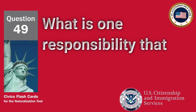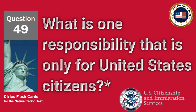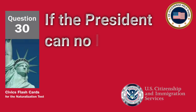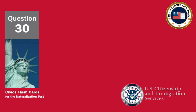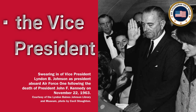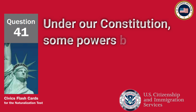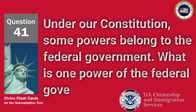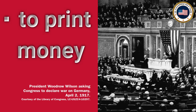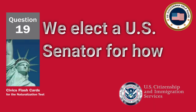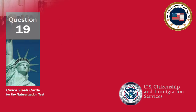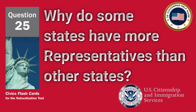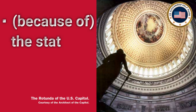What is one responsibility that is only for United States citizens? Serve on a jury. If the President can no longer serve, who becomes President? The Vice President. Under our Constitution, some powers belong to the federal government. What is one power of the federal government? To print money. Why do some states have more representatives than other states? Because of the state's population.